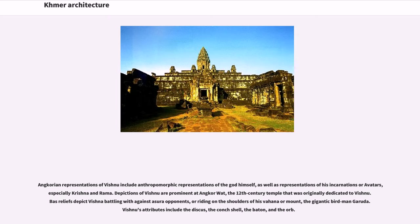Angkorian representations of Vishnu include anthropomorphic representations of the god himself as well as representations of his incarnations or avatars, especially Krishna and Rama. Depictions of Vishnu are prominent at Angkor Wat, the 12th-century temple originally dedicated to Vishnu. Bas-reliefs depict Vishnu battling against Asura opponents or riding on the shoulders of his vahana, the gigantic birdman Garuda. Vishnu's attributes include the discus, the conch shell, the baton, and the orb.